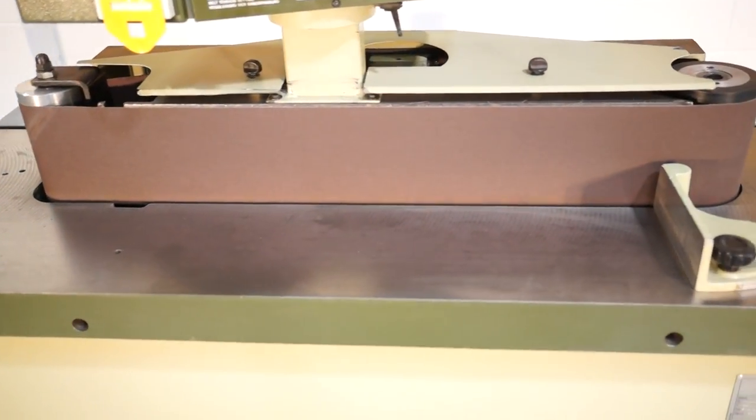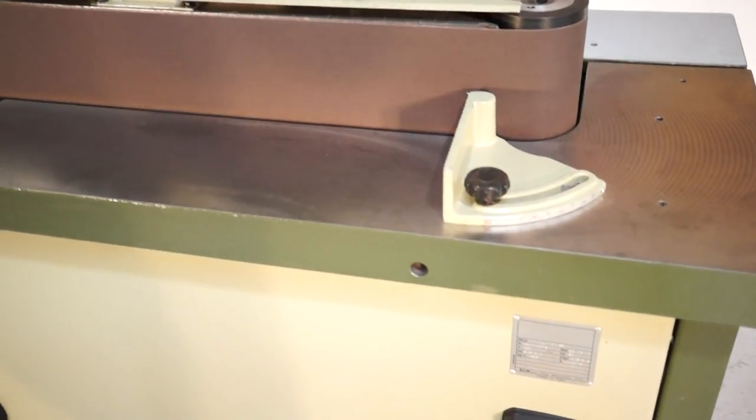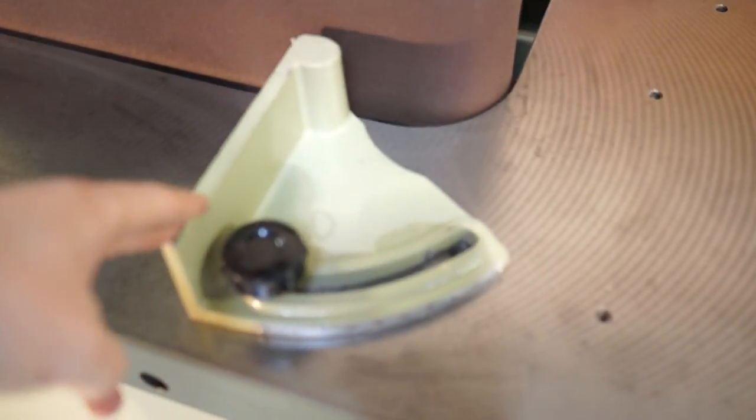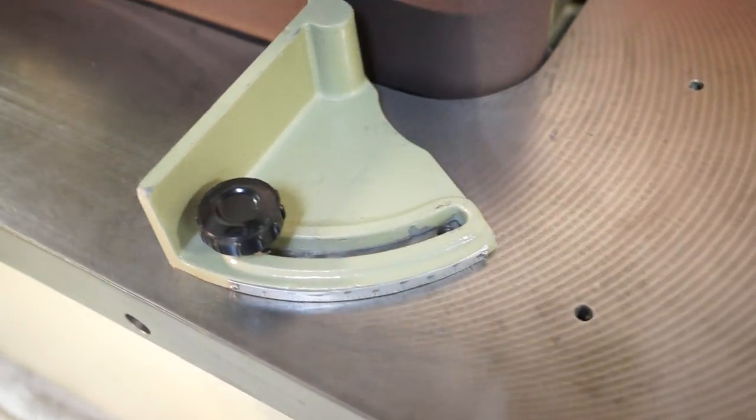31 inch front platen. You have your adjustable gauge. Obviously it also miters as well.